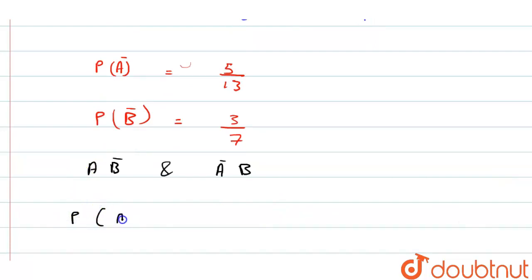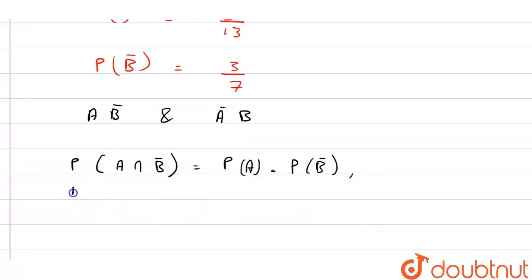So P(A ∩ B') equals P(A) into P(B'), and P(A' ∩ B) equals P(A') into P(B).